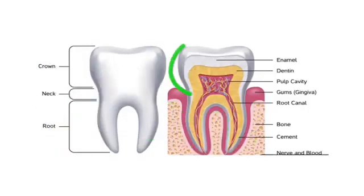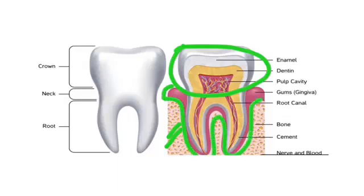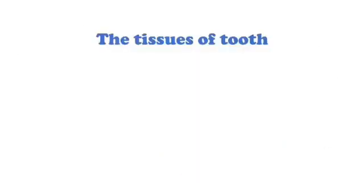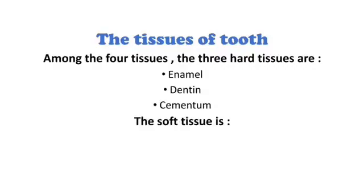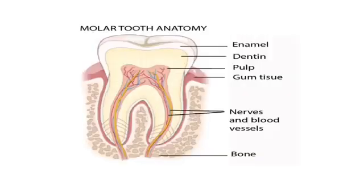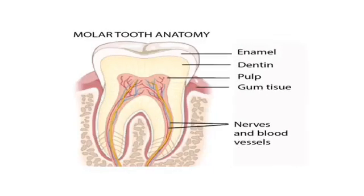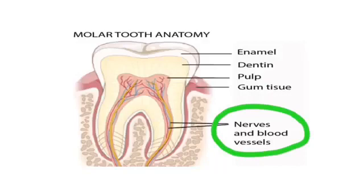In case of the crown, it is never covered with bone tissue. Rather, it is partly covered with soft tissue of the mouth known as the gingival tissue or gums. Among the four tissues of the tooth, the three hard tissues are enamel, dentin, and cementum, and the soft tissue of the tooth is the pulp. Pulp is also the only vascular tissue which furnishes the tooth through its nerves and blood vessels.